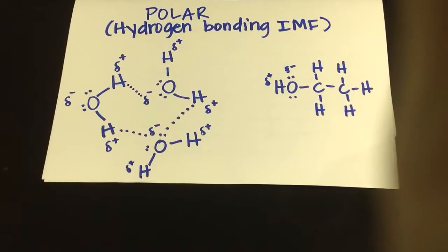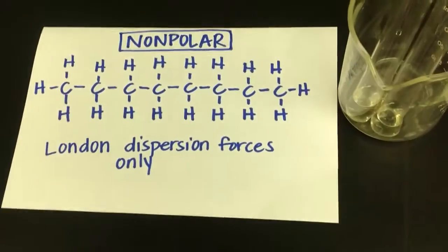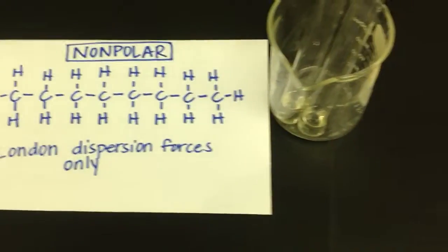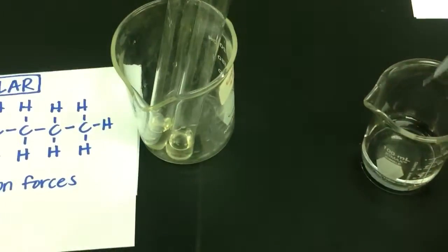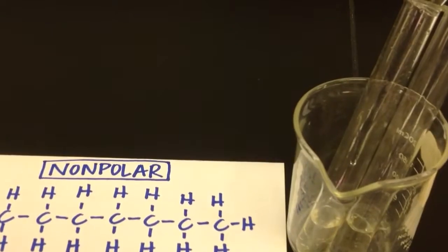So when I combine a polar solvent capable of hydrogen bonding with a non-polar solvent that is not capable of hydrogen bonding, I will see layers form. To demonstrate this, we've got some water we'll add to our non-polar solvent, and we'll also add our ethanol to our non-polar solvent. In both cases, we see the formation of layers.